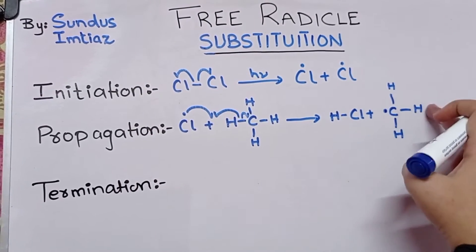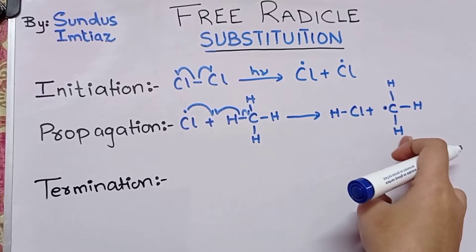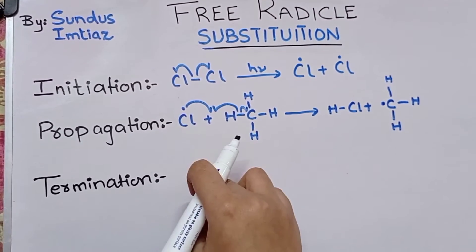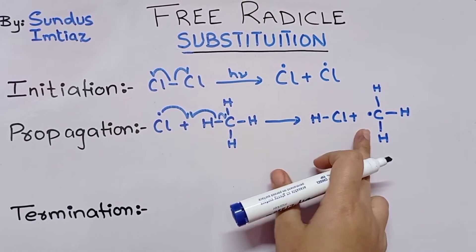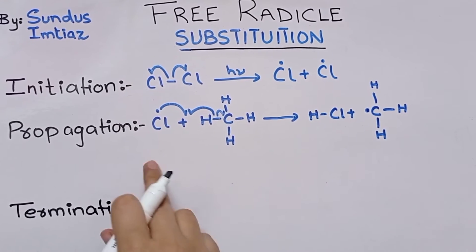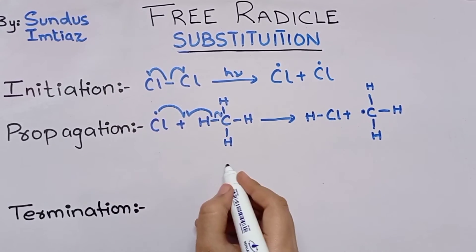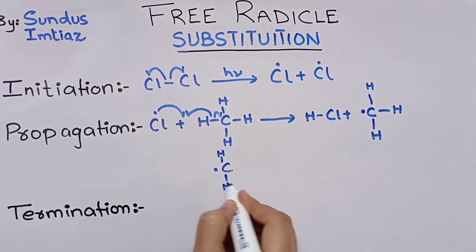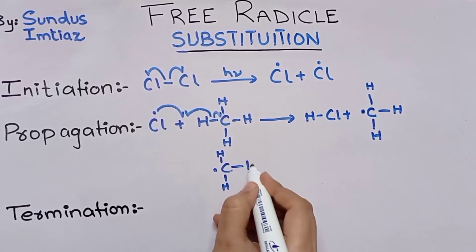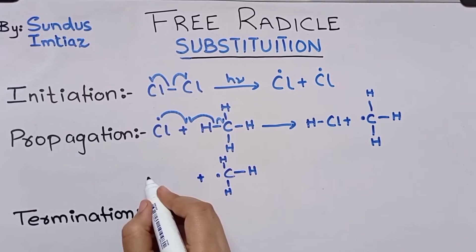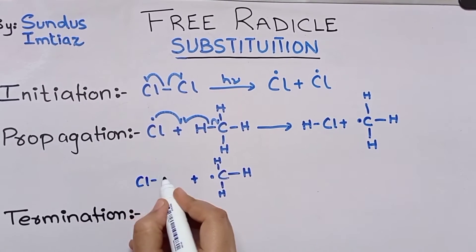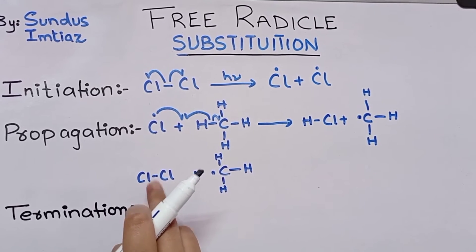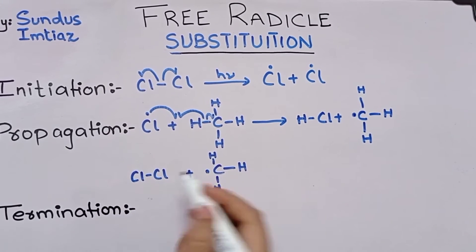I will show the two propagation steps here. This is the free radical, and this free radical will continue the chain reaction. Another halogen molecule will then react with this radical.